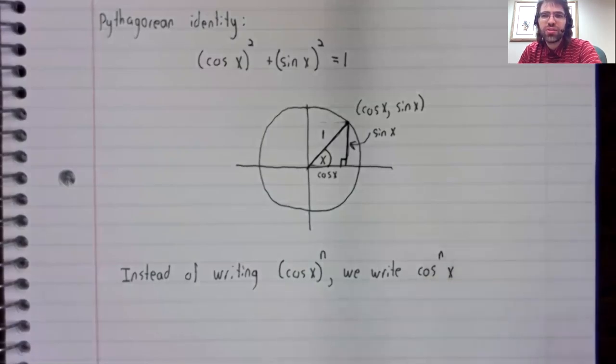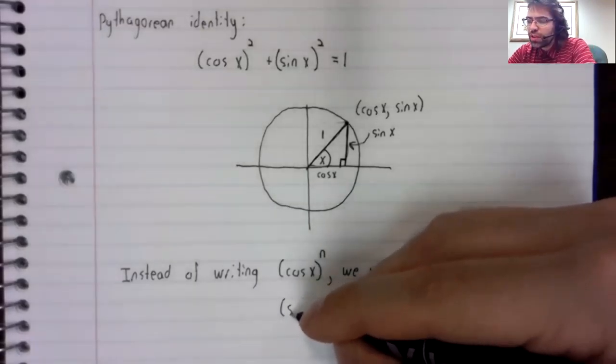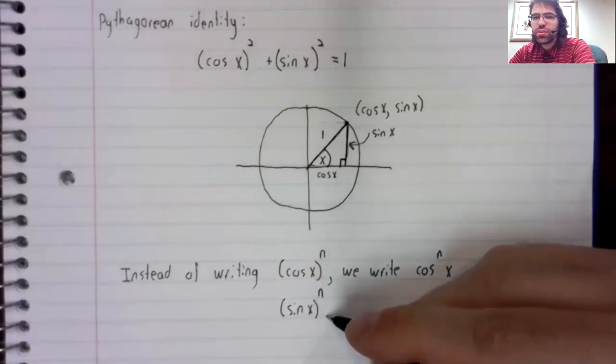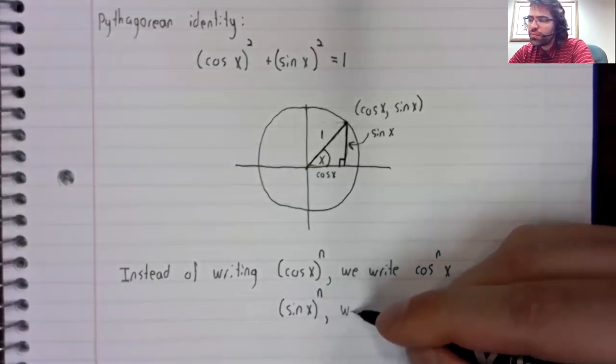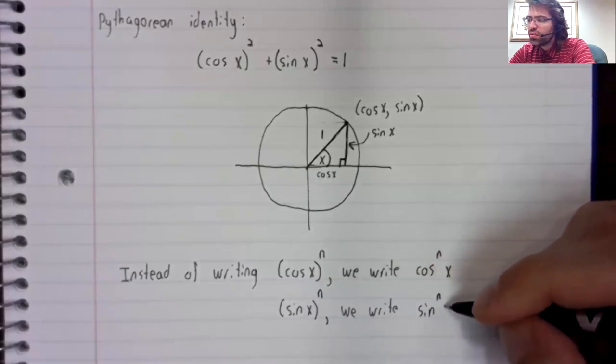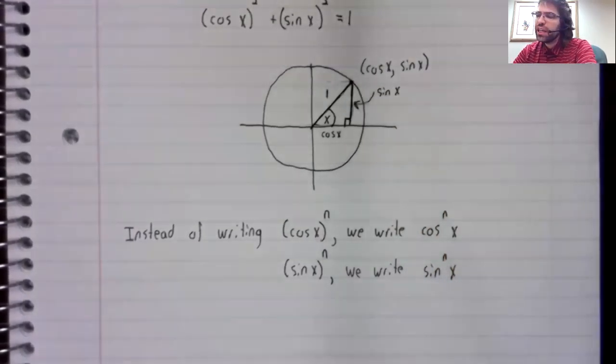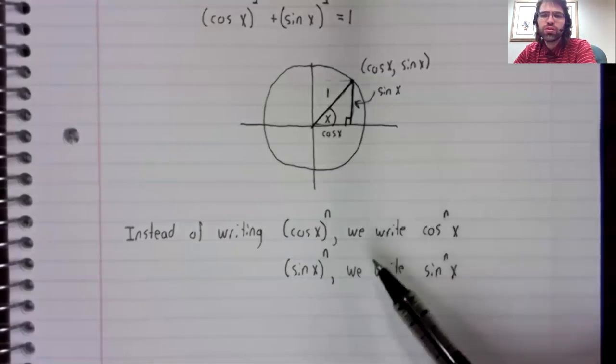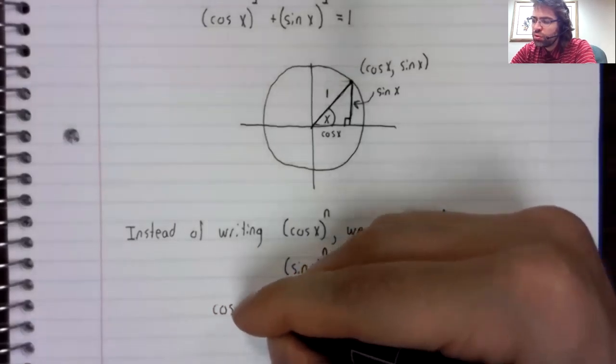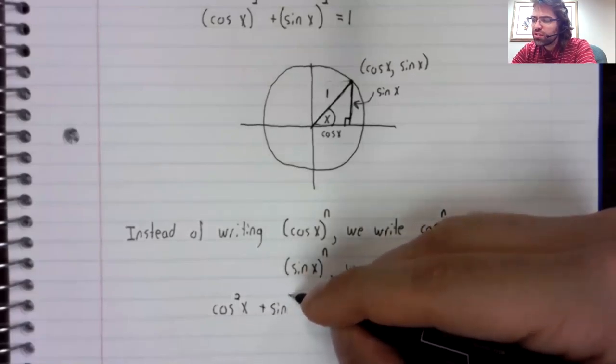We write the cosine, and then we put the power between the cos and the x. That's standard notation. And similarly, instead of writing that for the sine, we write this. So let's restate the Pythagorean identity using our more standard notation.